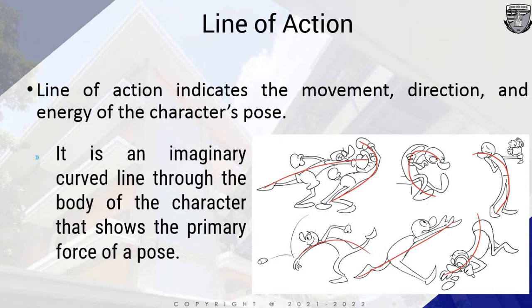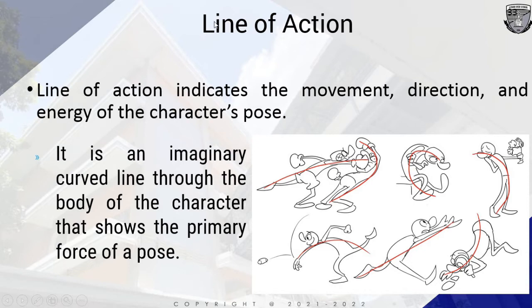The line of action is basically an indicator of the movement, direction, and energy of the character's pose. It is an imaginary curve line through the body of the character that shows the primary force of a pose. The line of action makes the character pose more visually interesting. Line of action must not be straight or S-shaped because this will make the character's pose look rigid and stiff. The presented characters use arcs — such as a C-shape for a sitting position — and line of action is very important in creating more exaggerated cartoon action.